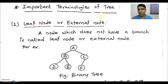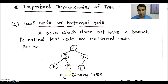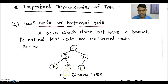The next topic is important terminologies of a binary tree. The first term is leaf node or external node. A node which does not have a branch is called a leaf node or external node in the binary tree. Consider the binary tree given. In the given binary tree, node D, node E, and node F are called leaf nodes or external nodes because they do not have any branch.